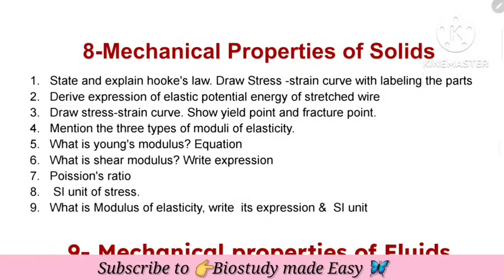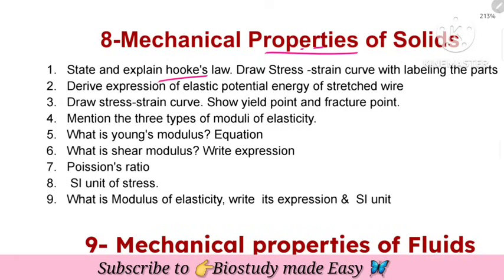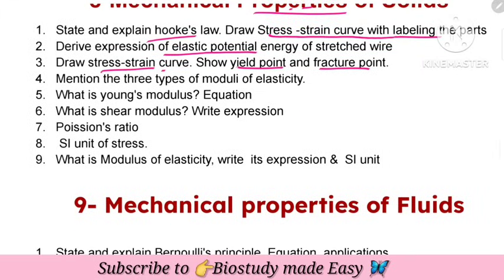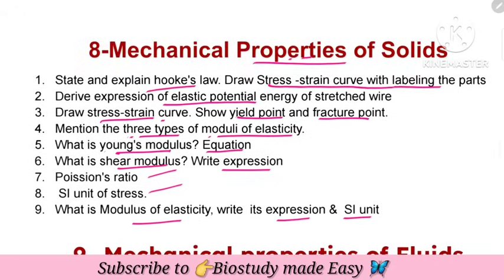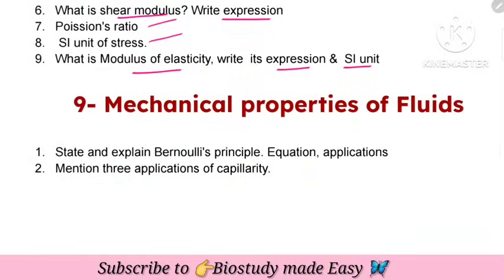Next, mechanical properties of solids chapter. State and explain Hooke's law. Draw the stress-strain curve with labeled parts. Expression for elastic potential energy. Draw the stress-strain curve and show yield point and fracture point. Mention three types of moduli of elasticity — Young's modulus, shear modulus with their equations, Poisson's ratio, SI unit of stress, and SI unit of modulus of elasticity.